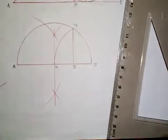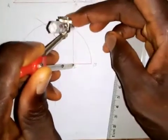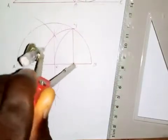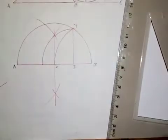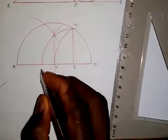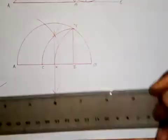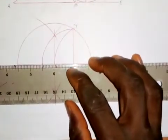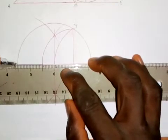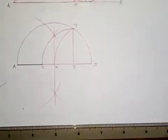I take my compass, put the pin point at Z, and extend it to Y, then draw an arc from here. This arc meets line AB at a point I will call point C. So distance AC is the diameter of the circle whose circumference is given. I make it a thick line to highlight it.